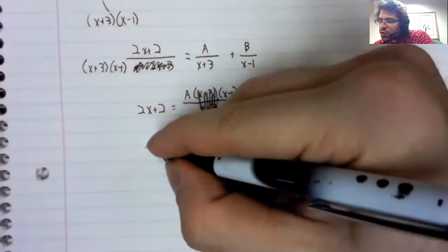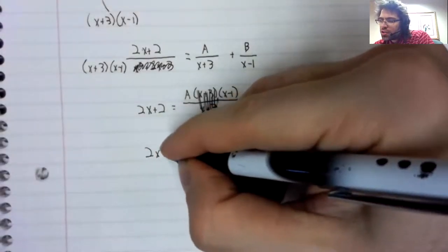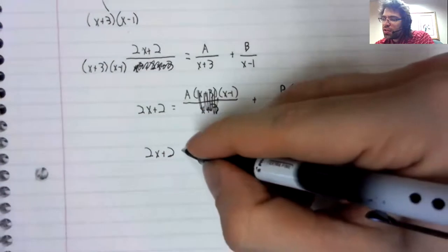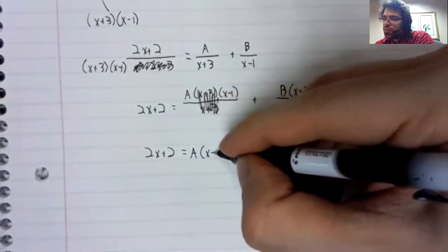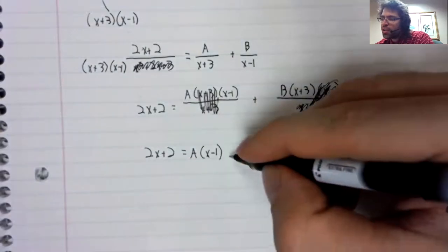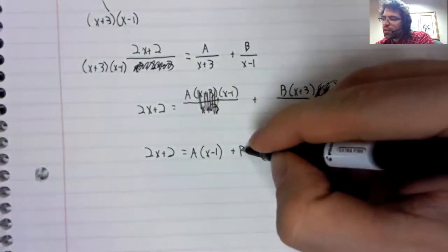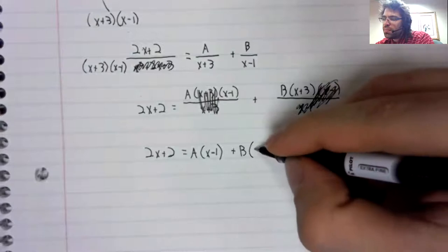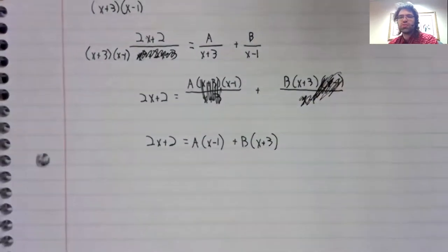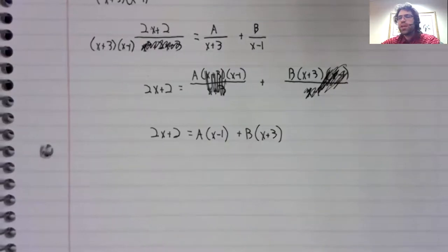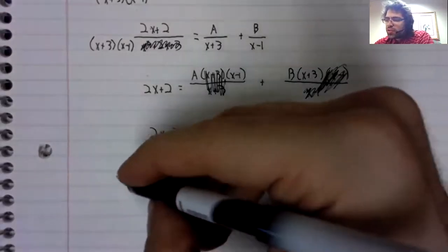And we have this. So rewriting that cleanly, 2x plus 2 equals A times x minus 1 plus B times x plus 3.